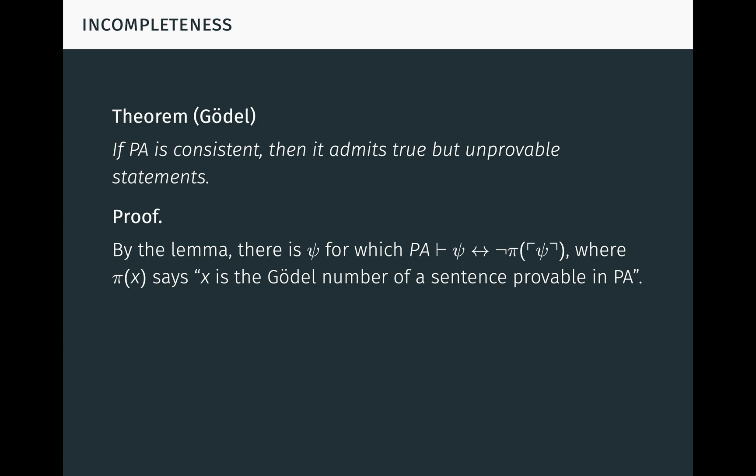Indeed, by the fixed-point lemma, there is a sentence psi for which Peano arithmetic proves the equivalence, psi if and only if not pi of psi, where pi of x says x is the Gödel number of a sentence provable in Peano arithmetic. Note that this property pi is expressible in the language of arithmetic because proofs themselves are just finitary objects which can be encoded as numbers. So psi says, I am not provable.